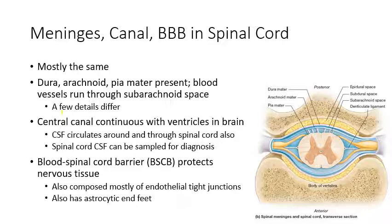All the cerebrospinal fluid is in communication, so any substance in one part of the CSF will be in the rest of it — you can sample it in the spinal cord and find out what substances are circulating in the brain. In the spinal cord, you have essentially the same blood-brain barrier, called the blood-spinal cord barrier, composed mostly of tight junctions between endothelial cells lining capillaries that serve the spinal cord, along with astrocytic end feet.